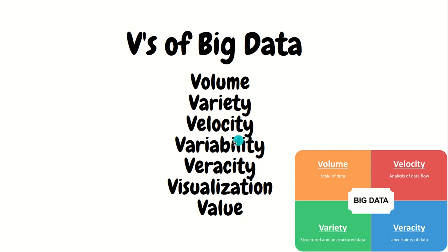The fourth V is Variability: the meaning of data keeps changing depending on context. For example, a particular English word can have multiple meanings depending on the context in which it's used — that's variability, and it's also a challenge we need to address. The fifth V is Veracity, meaning trustworthiness. If the data you're analyzing turns out to not be trustworthy, it lacks veracity — that's a key characteristic of big data.